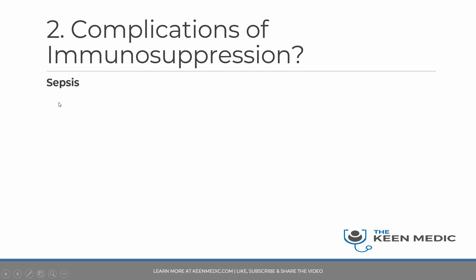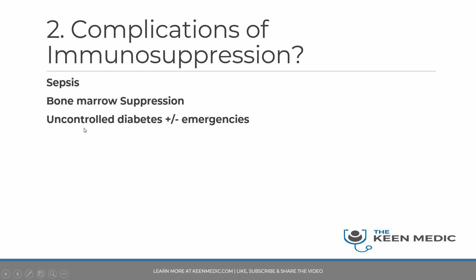Bone marrow suppression is very much a real risk, so you need to monitor the full blood count around the time of transplant and at regular intervals thereafter. Diabetes can be uncontrolled, and even patients who do not have diabetes can develop it because of their immunosuppressive medications. In these situations, patients are at risk of diabetic emergencies. Even patients with type 2 diabetes can develop DKA — ketosis-prone type 2 diabetes is a recognized phenomenon.